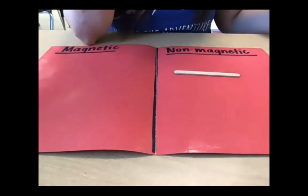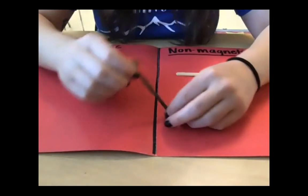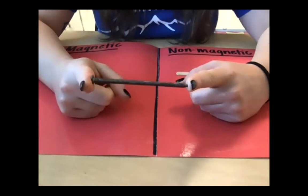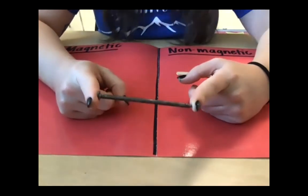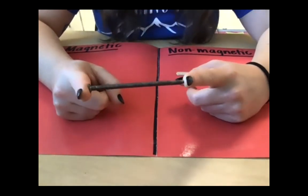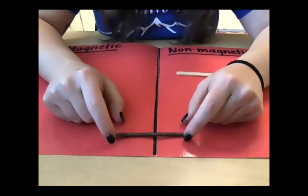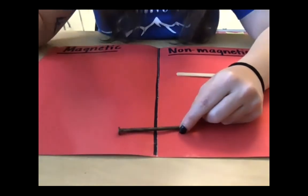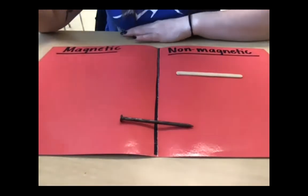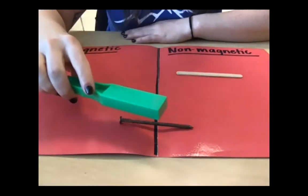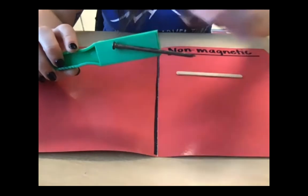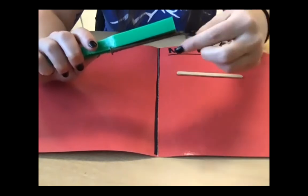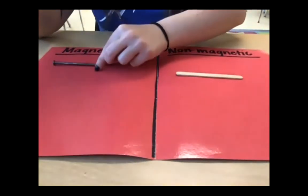Let me try a nail. I know that a nail is made out of metal, and I'm trying to figure out if it's made out of a type of metal that is magnetic. I think it is — I think I saw a nail in the PowerPoint, so I think a nail is magnetic. I'm going to try and pick it up with my magnet. Would you look at that! My nail is attracted — pulled towards my magnet — so that means it is magnetic. I'm going to put it on the magnetic side.